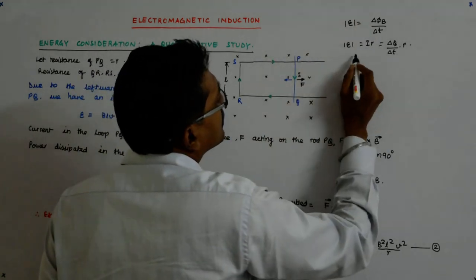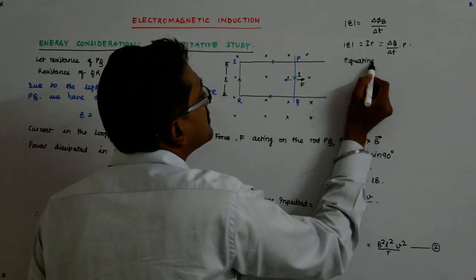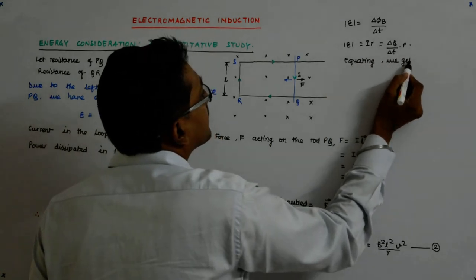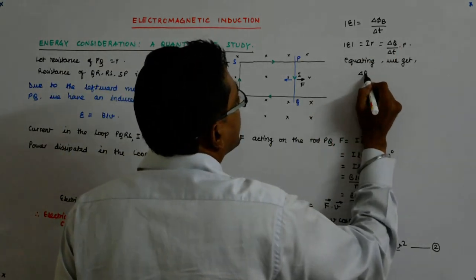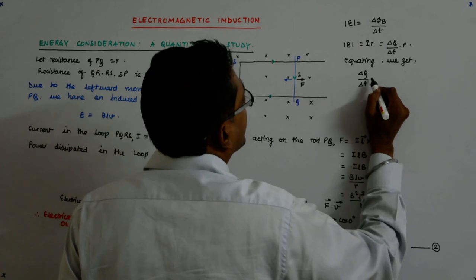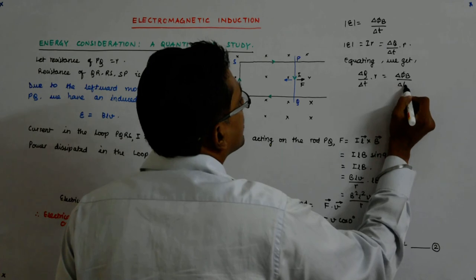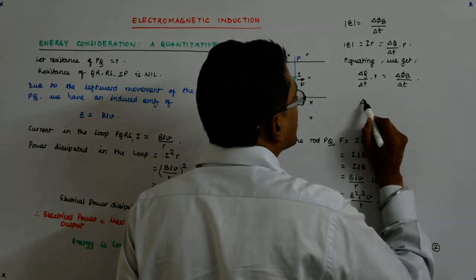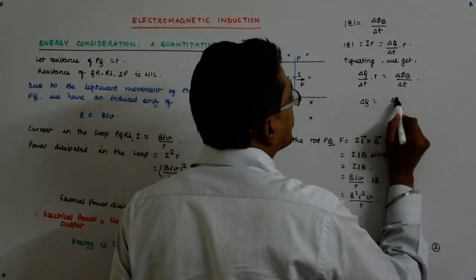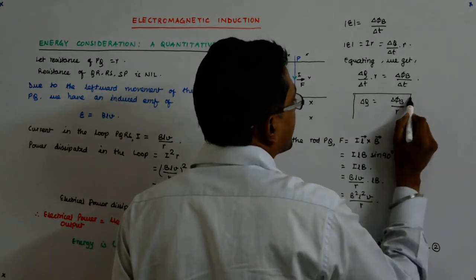Equating, we get delta Q upon delta T into R is equal to delta phi B upon delta T. Now, what does that tell you? That tells you that delta Q is equal to delta phi B upon R. Interesting relation?